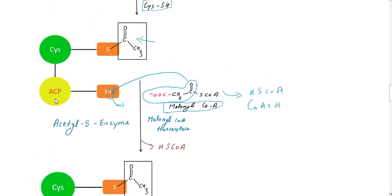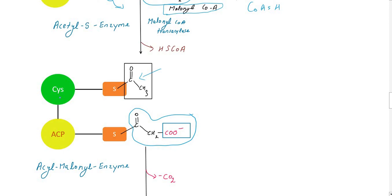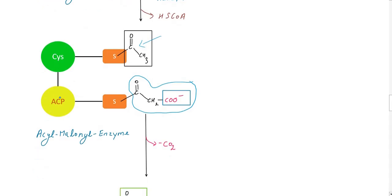The acetyl group on the cysteine SH is called acetyl-S-enzyme. Next, the malonyl group from malonyl-CoA is loaded onto the ACP SH group, forming malonyl-S-ACP, giving us acetyl-malonyl enzyme. The next step is the condensation or decarboxylation step.